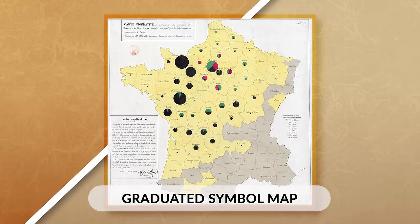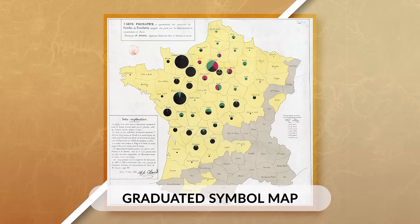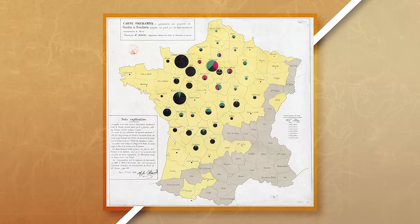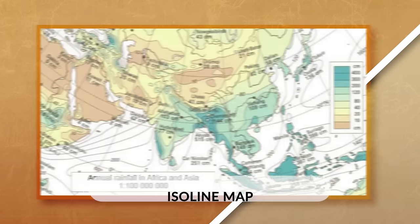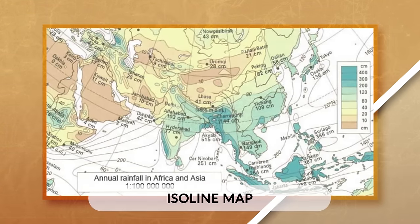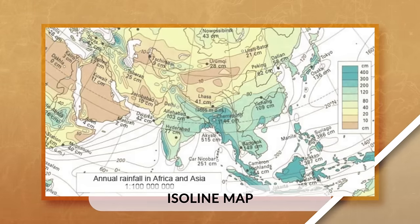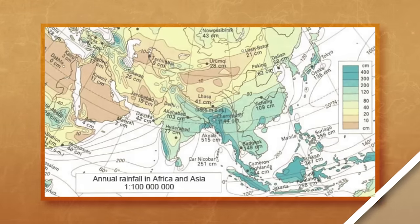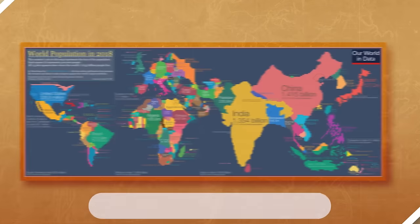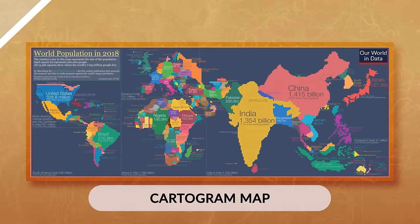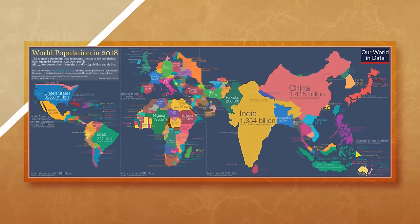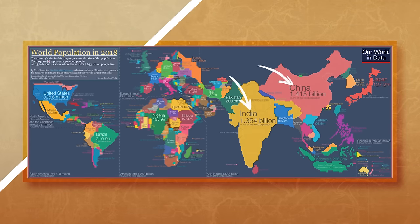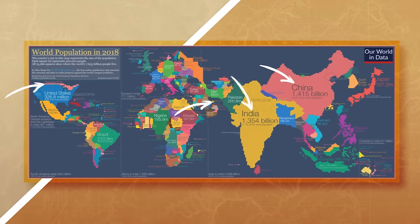A graduated symbol map uses shapes, items, or symbols to show the location and the amount of data. These maps can be very visual but sometimes confusing due to overlapping information. Isoline maps use lines to connect different areas that have similar or equal amounts of data — a common example being a weather map showing areas with similar temperatures. A cartogram map shows data dynamically with the greatest value represented by the largest area. For example, in a cartogram China and India have larger populations than Canada and Bahrain.